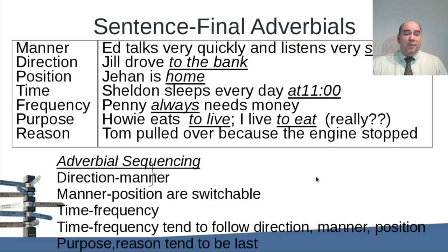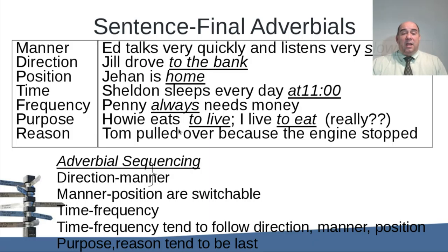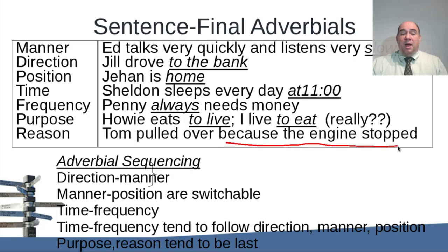Let's look at different types of adverbials. You have adverbials of manner — how someone walked. Adverbials of direction — where they walked. Position — 'Jahan is home,' describing where he is. Time — 'Sheldon sleeps every day at 11,' where 'at 11' describes when. Frequency — 'always.' Purpose — 'I live to eat,' describing the purpose. And reason — 'Tom pulled over because...' — an adverb of reason. Some of these can be full clauses; others can be just a word or phrase.